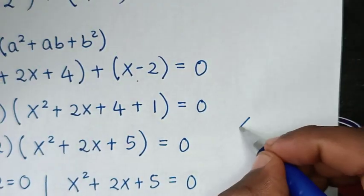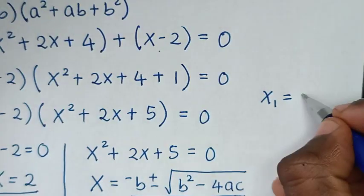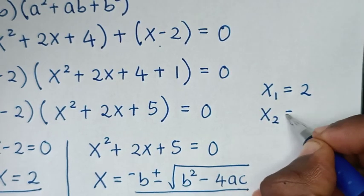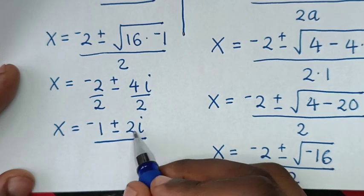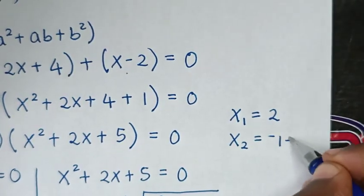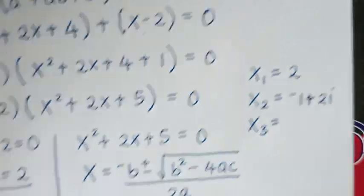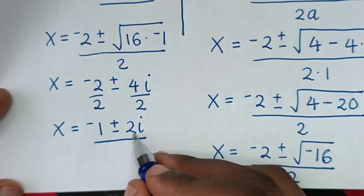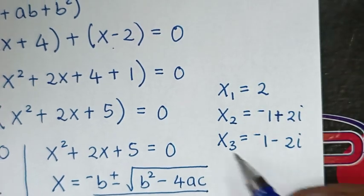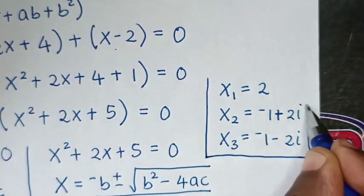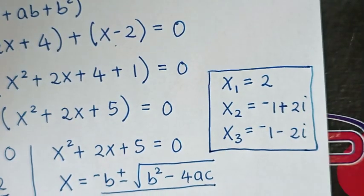Therefore, the first value of x, which is the real solution, is x equals 2. The second value of x, which is a complex solution, is x equals negative 1 plus 2i. The third value of x is x equals negative 1 minus 2i. These are all the values of x: one real solution and two complex solutions.